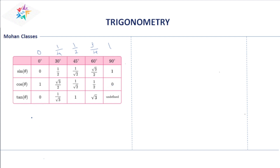For tan theta, recall that tan theta equals sin theta divided by cos theta. So: 0/1 = 0; (1/2)/(√3/2) = 1/√3; (1/√2)/(1/√2) = 1; (√3/2)/(1/2) = √3; and 1/0 is undefined.